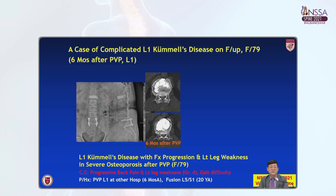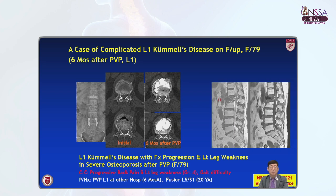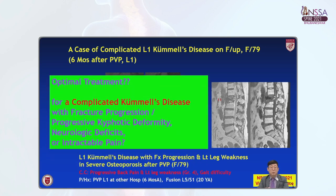This is the follow-up CT scan. Compared with the previous initial CT scan, you can see the more collapsed vertebral body of L1. What would you do for this specific patient as an optimal treatment — a complicated Kummel disease patient having fracture progression, progressive kyphotic deformity, neurologic deficit, or intractable pain?